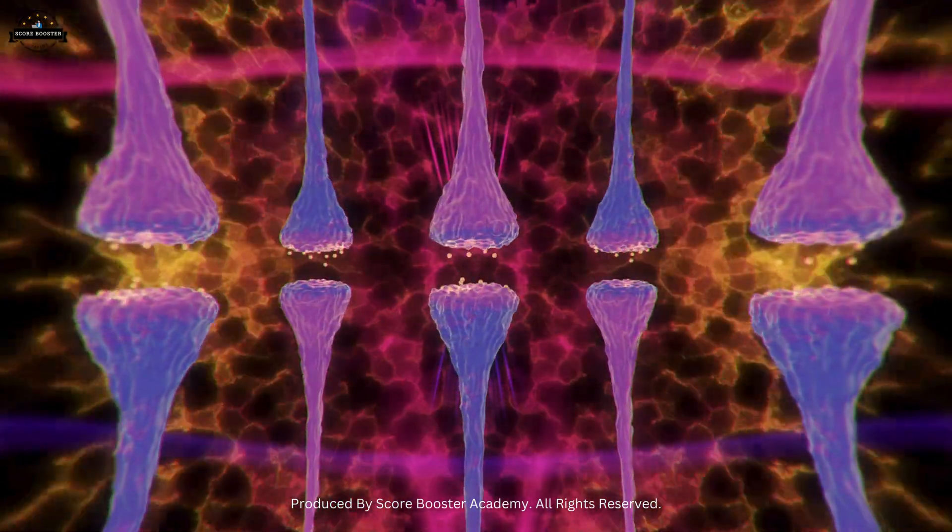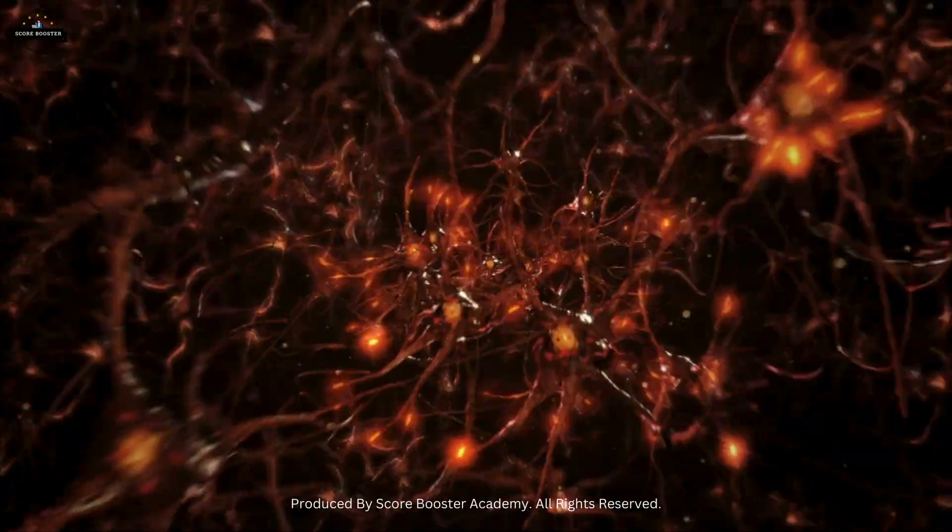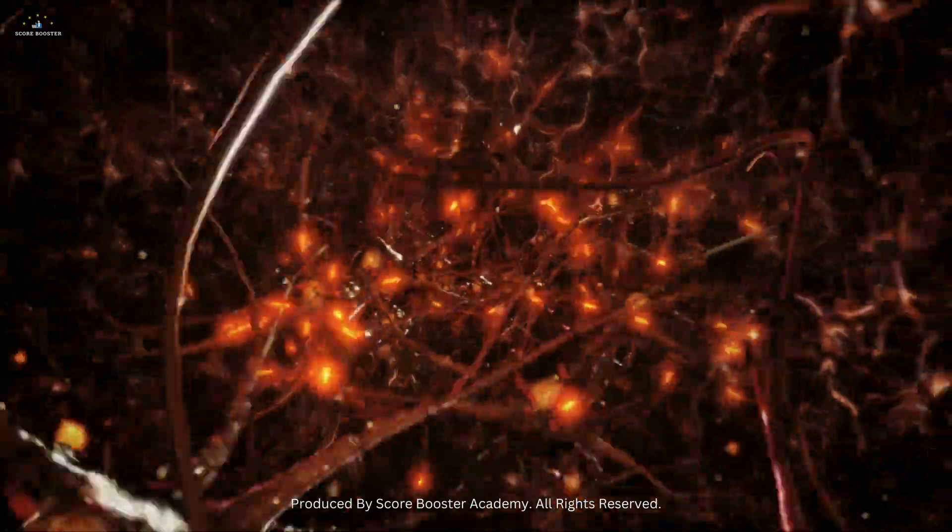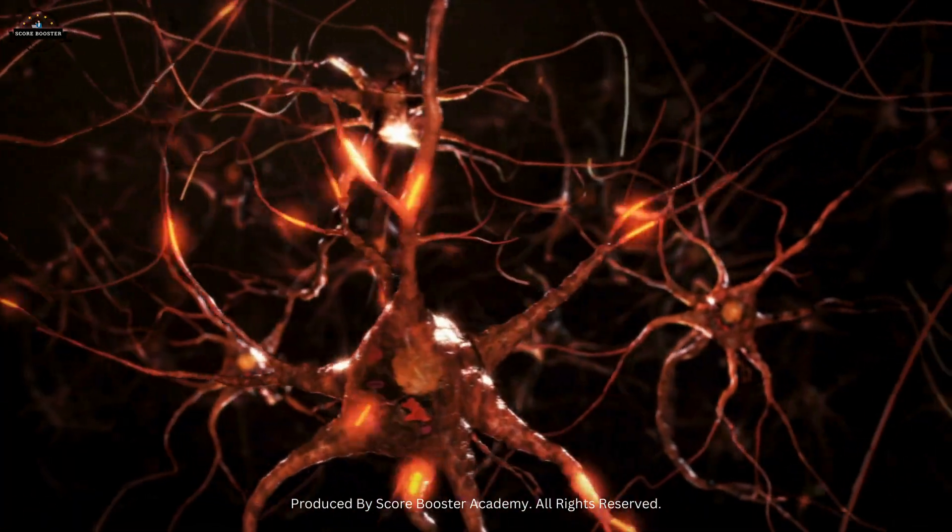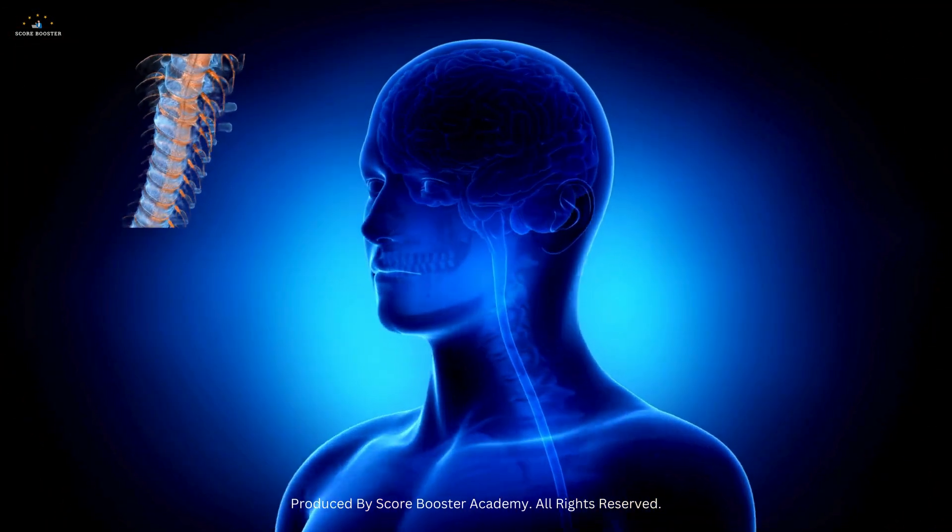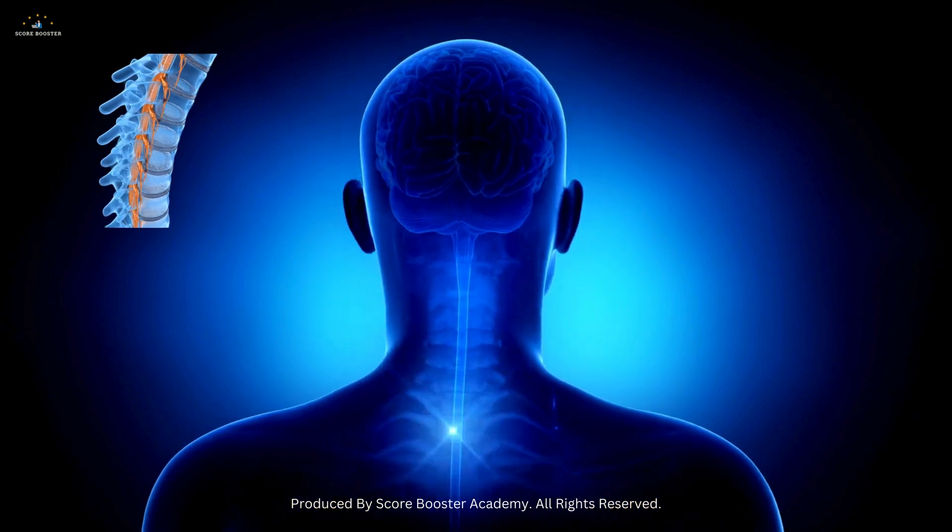The diversity of synapses reflects the complexity of our nervous system, enabling it to perform a wide range of tasks from simple reflexes to complex cognitive processes. For instance, the synapses in the spinal cord are involved in reflex actions, enabling you to quickly withdraw your hand from a hot surface.